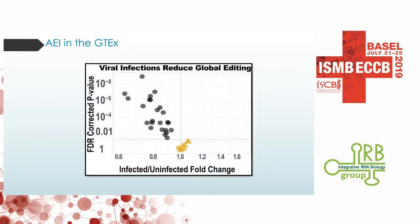Another finding from analyzing the GTEx is that when we look at subjects infected by chronic viral infections, you get significantly lower levels of global editing in ALUs in almost all tissues, except for the majority of the brain tissues and the testes.